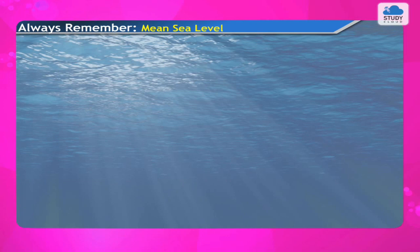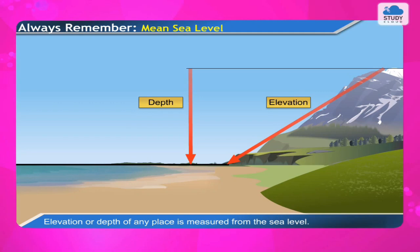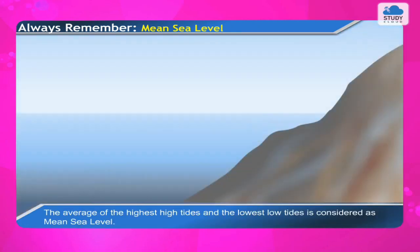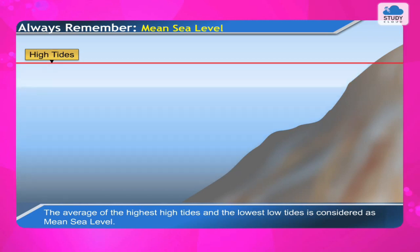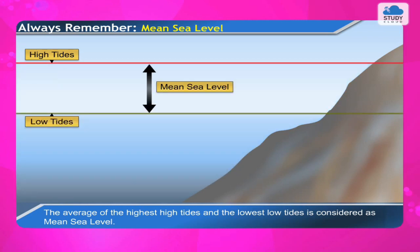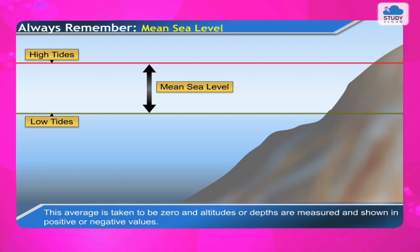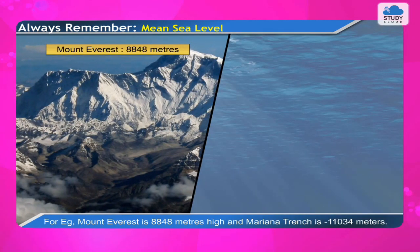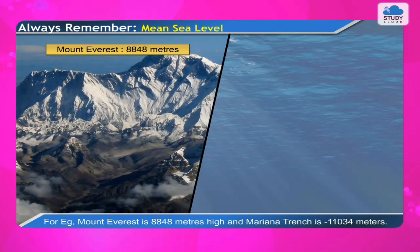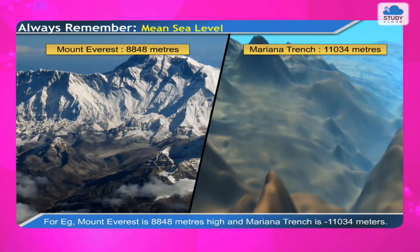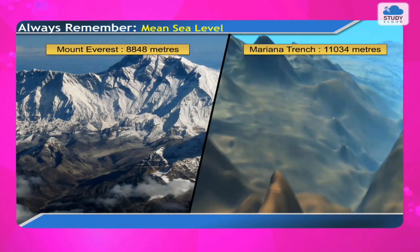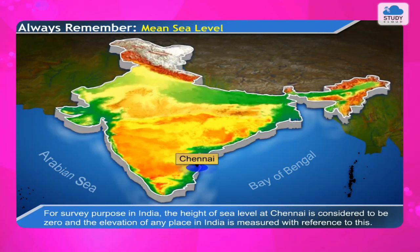The elevation or depth of any place is measured from the sea level. The average of the highest high tides and the lowest low tides is considered as mean sea level, taken as zero, and altitudes or depths are measured in positive or negative values. For example, Mount Everest is 8,848 meters high and Mariana Trench is 11,034 meters deep. For survey purposes in India, the height of sea level at Chennai is considered to be zero.